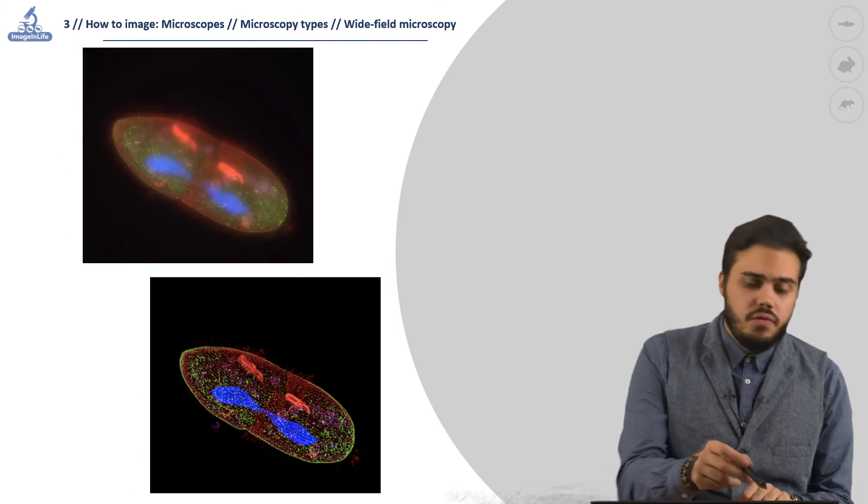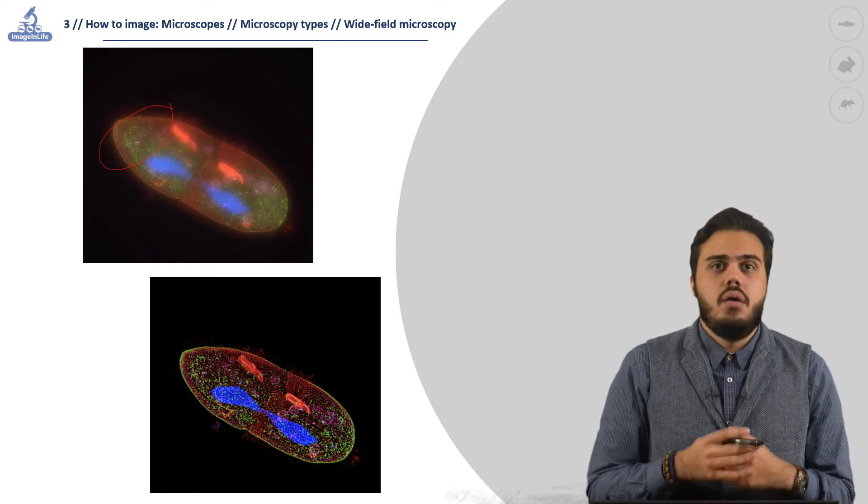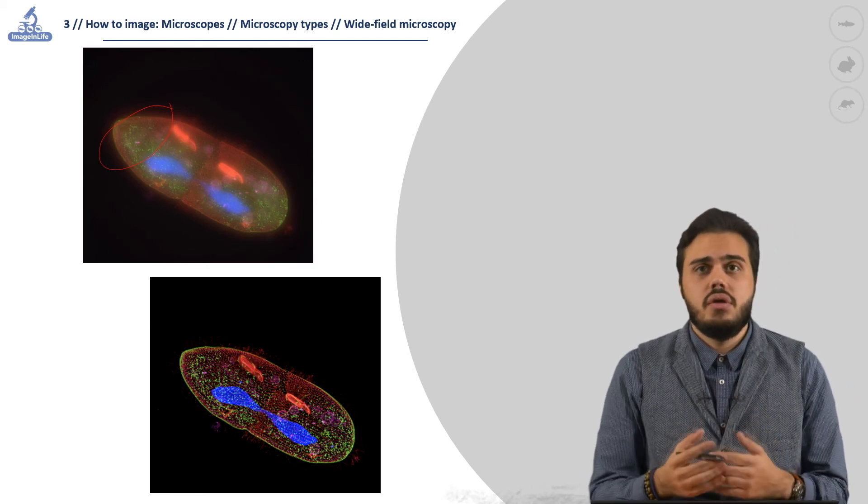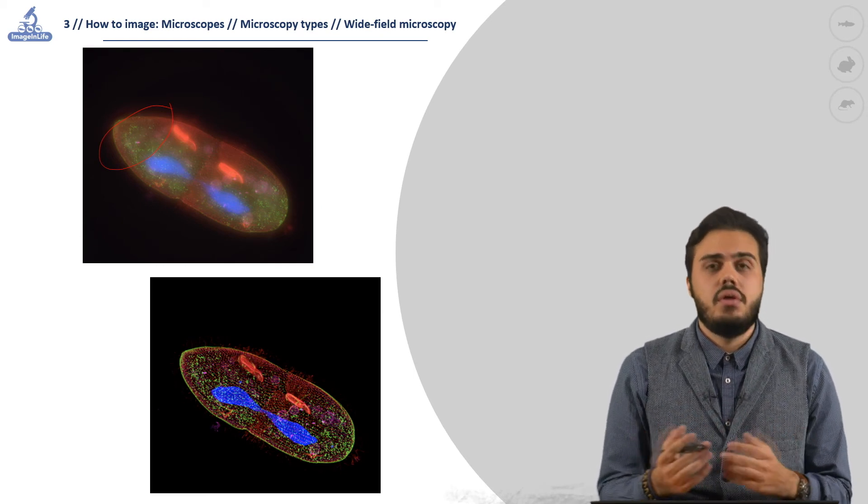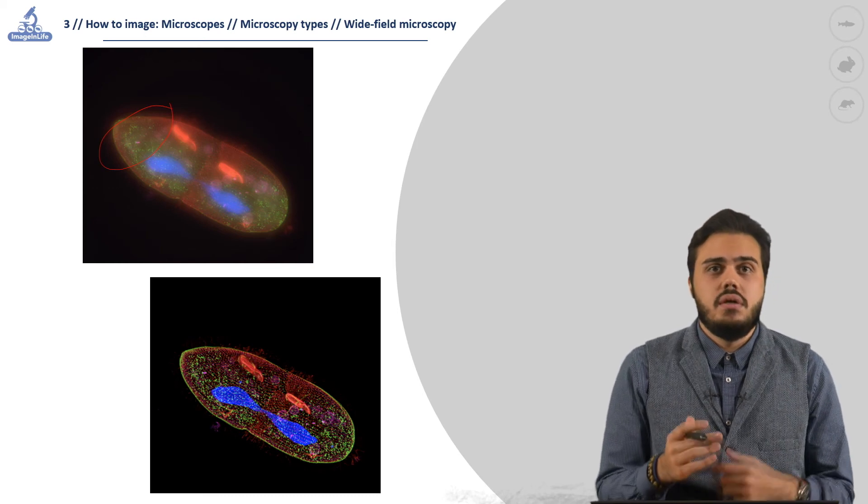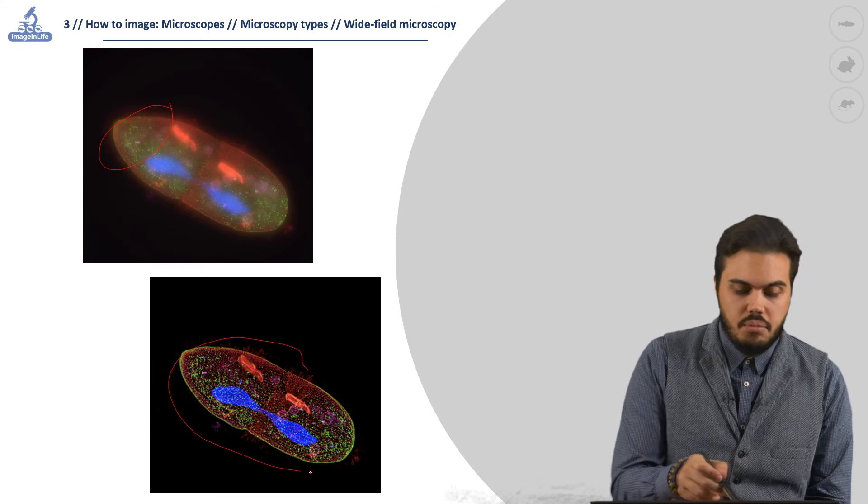To remove the often blurry light around the specimen, more and more deconvolution methods are arising. The deconvolution is a computational method that eliminates the light out of focus, reassigning the blurry light to the correct source point, clearing the image.